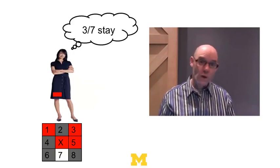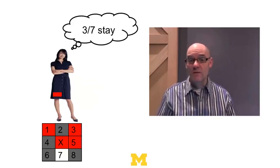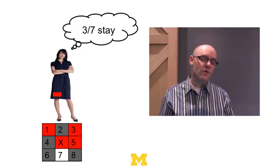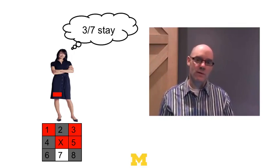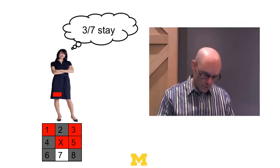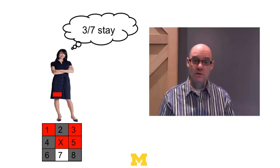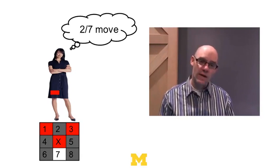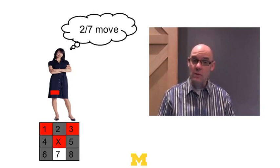Schelling writes down a threshold-based rule: each person has a threshold and decides based on it whether to stay or move. One rule might be 33% — if 33% of my neighbors are like me, I'll stay; if fewer than 33%, I'll move. This woman counts three of seven neighbors like her, so she stays. But if one of those neighbors moved out and now only two of seven were like her, she'd move. That's the model.